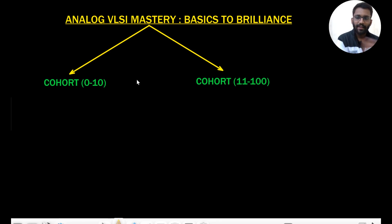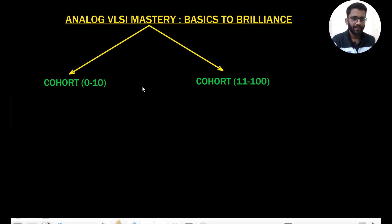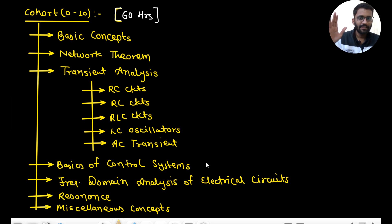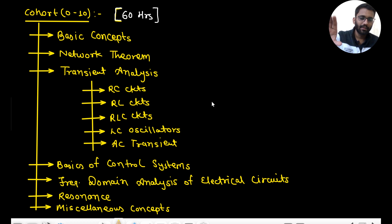We are planning our course in two parts: cohort 0 to 10 and cohort 11 to 100. In cohort 0 to 10, we will start from basic concepts of network analysis, then move to network theorems, then transient analysis, which will be taught in a very deep manner.